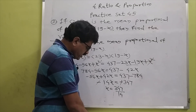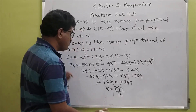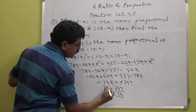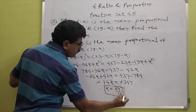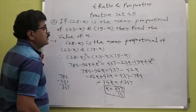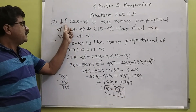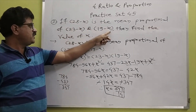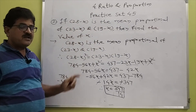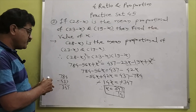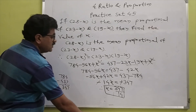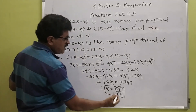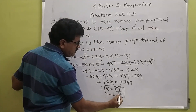Therefore 347 divided by 14. The value of X is 347 divided by 14. This is the answer.